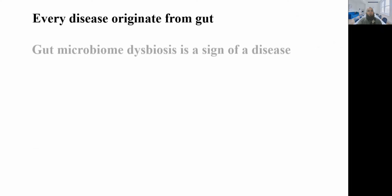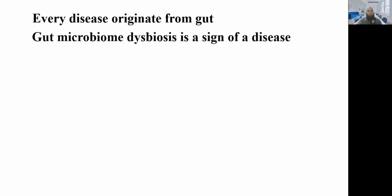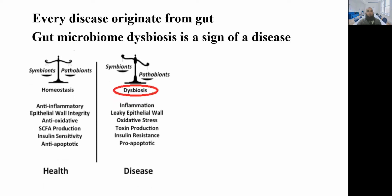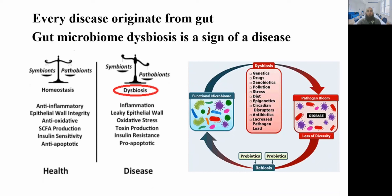According to recent concepts, every disease originates from the gut, and there is dysbiosis in the gut when there is a disturbance in the gut microbiome — this is a sign of disease. Dysbiosis means when there are fewer symbiotic bacteria compared with pathogenic ones; in other words, there are more bad bacteria compared with the good ones.